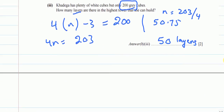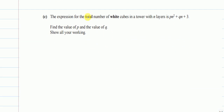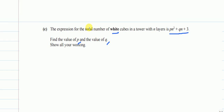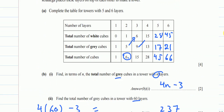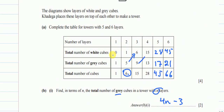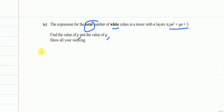For part C, we need the expression for the total number of white cubes in the form pn² + qn + 3, where we must find p and q. We already have the white cube totals from our table for each layer, so we can substitute known values to set up equations.